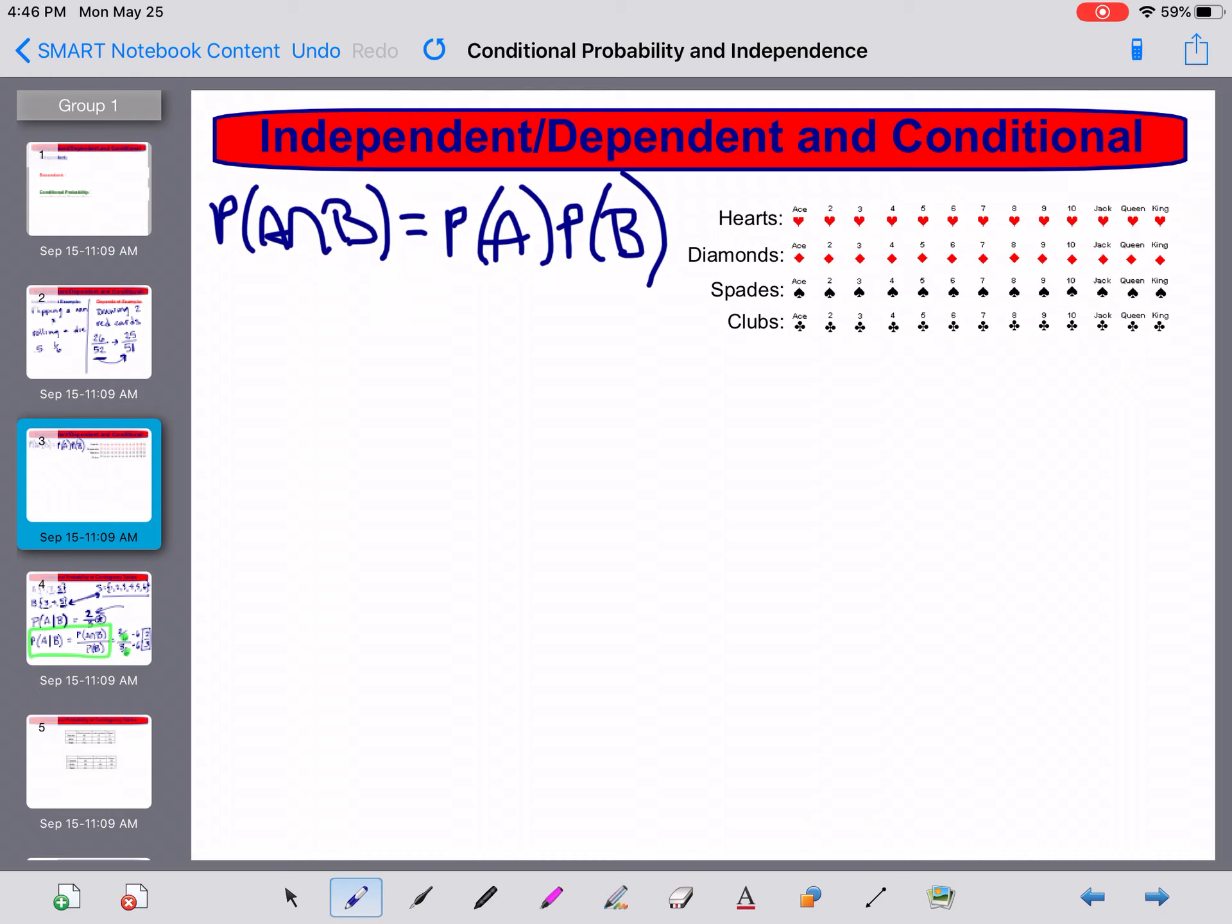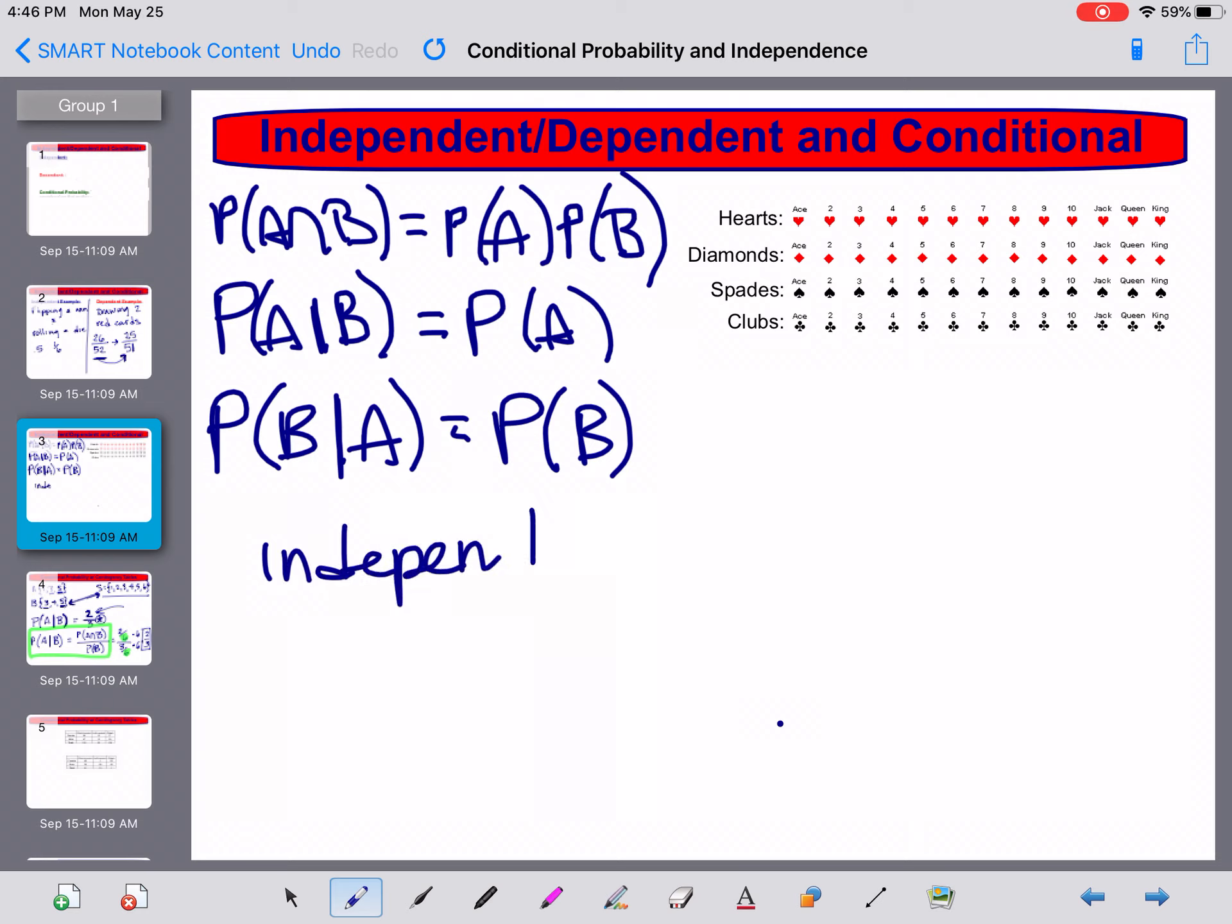And I can also do this with conditional probabilities. If I know the probability of A given B and I can show that that's the same as the probability of simply A, those are independent events. If not, they're not independent events. I can also flip this around, so the probability of B given A equals the probability of B. If I can show any of these being true, I can use any of them or any combination of them, then I have independent events.